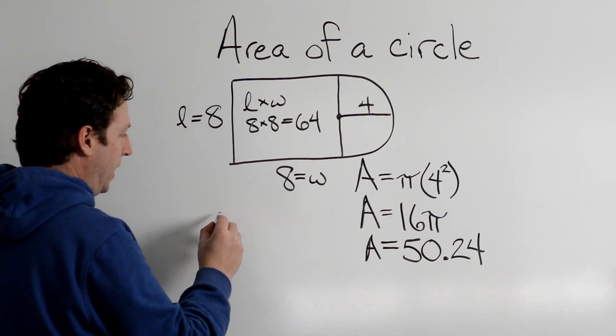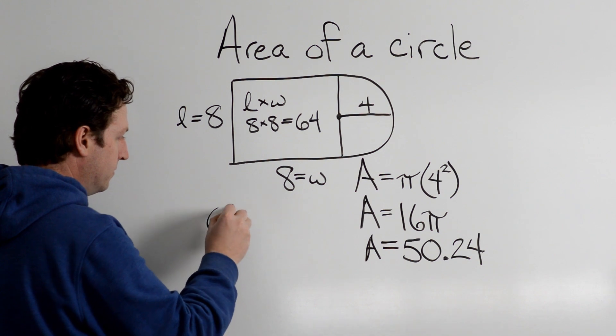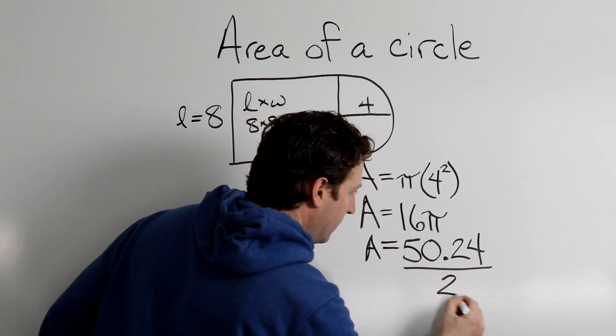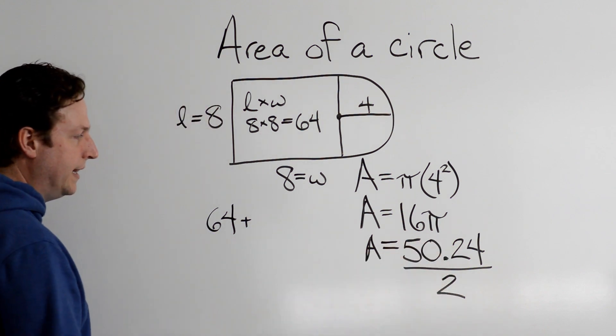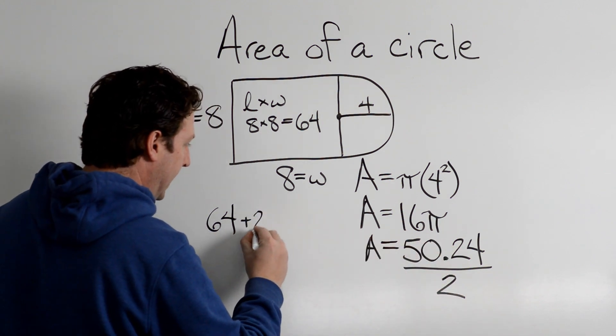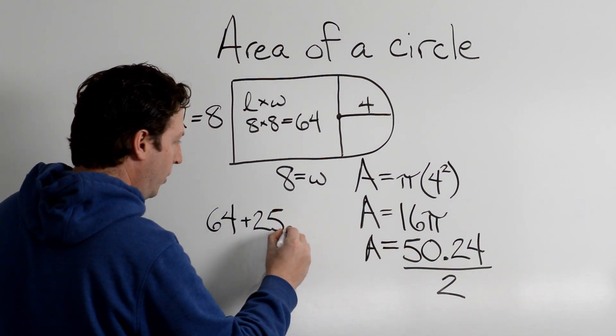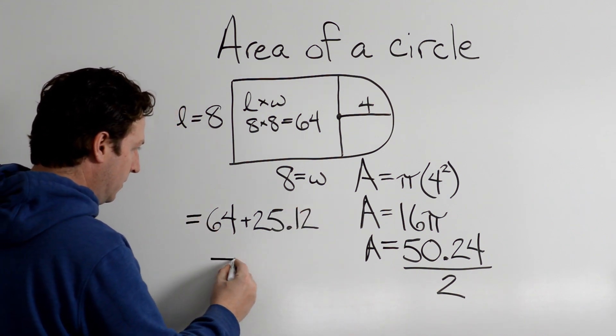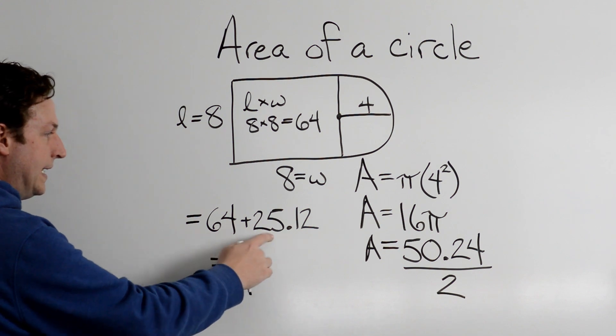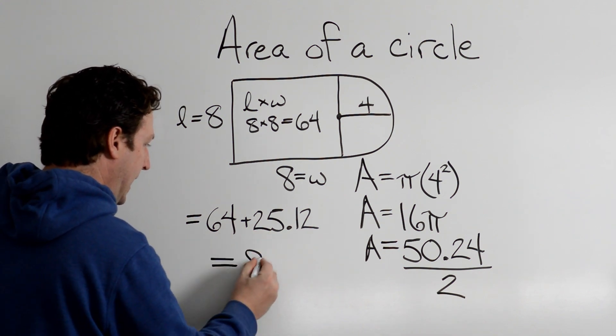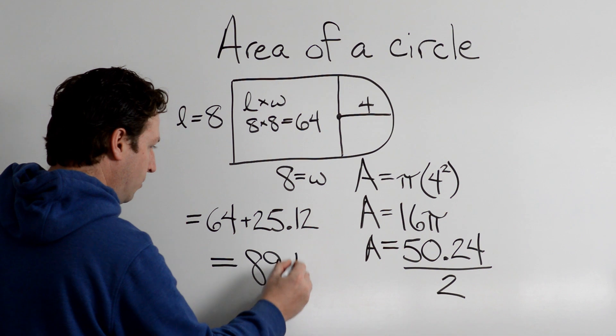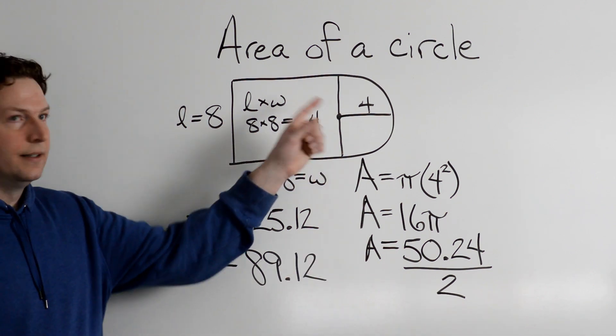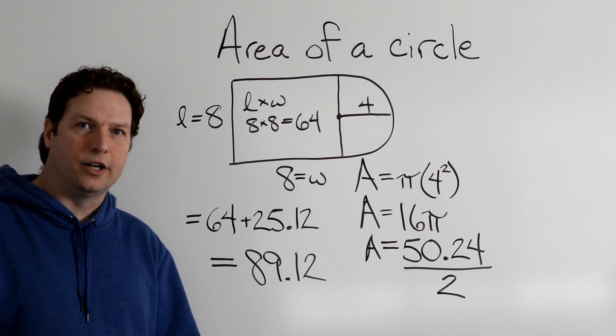So we take this area of the square, and we're going to divide this by 2, and I get 25.12. Now we need to add these. What do I get here? 89.12. That is the area of a funky little shape.